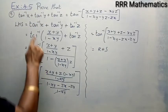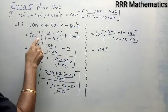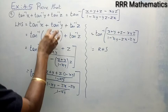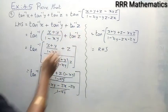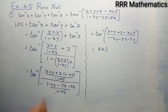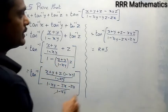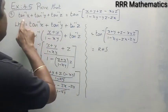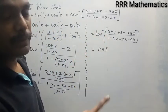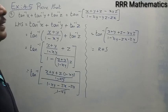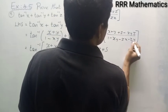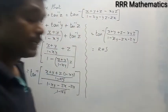Is it clear? Very simple. In the very first line, I applied the addition formula between two terms. From the second line, I used the same formula again, treating the combined fraction as x and z as y, and finally we get tan inverse x plus tan inverse y plus tan inverse z equal to tan inverse of x plus y plus z minus xyz, all divided by 1 minus xy minus yz minus zx.